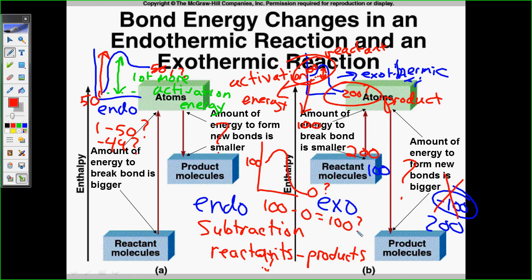So, reactants minus products. 100 minus zero. So, it is endothermic. So, we did just hit the wrong ones. What do you think? That's a lag here. What do you think? I think I want you to use your wonderful technology to look up an exothermic graph. Tell me what you got.